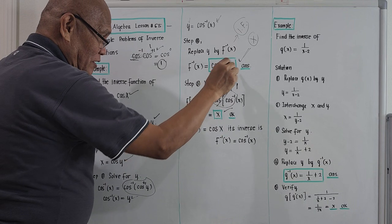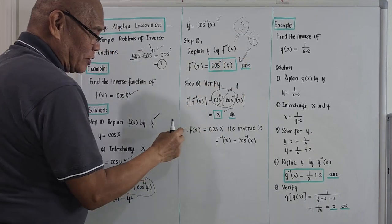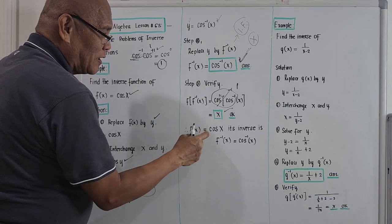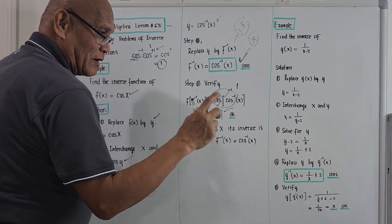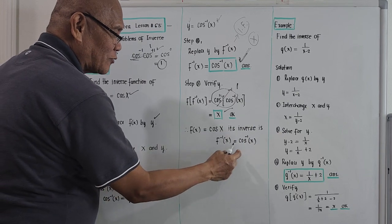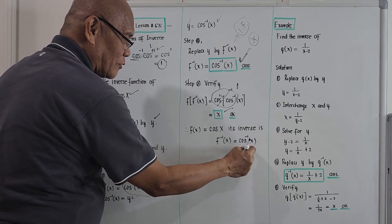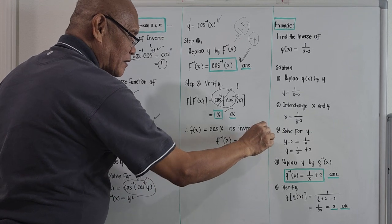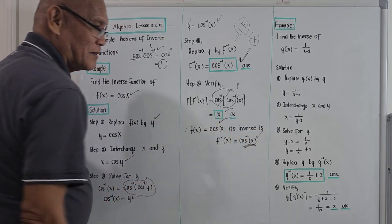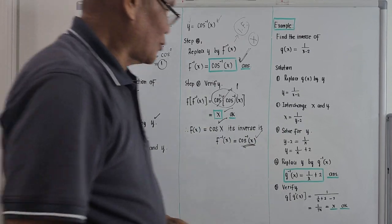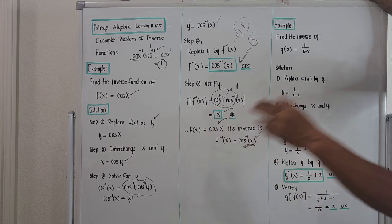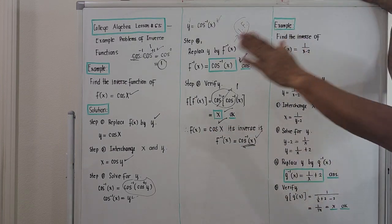Our answer is correct. Therefore, f of x which has a value cosine of x, its inverse function is f to the negative one of x equals cosine to the negative one of x. This is the inverse of cosine.